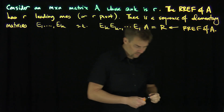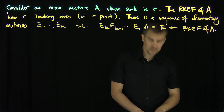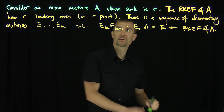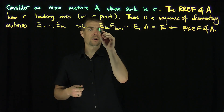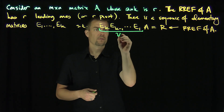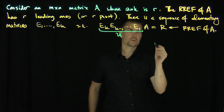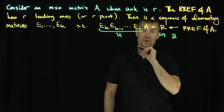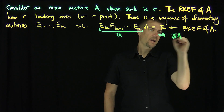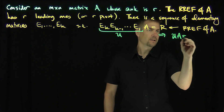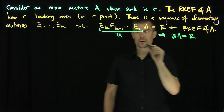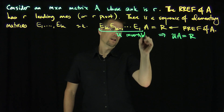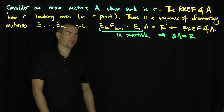What we're going to do now is take this product of elementary matrices and call it U. So in other words, U times A is equal to R, where U is invertible since it's a product of elementary matrices.